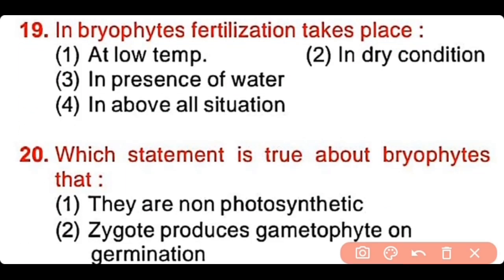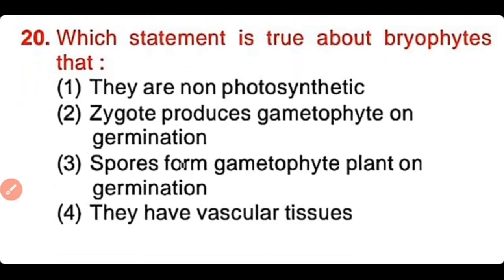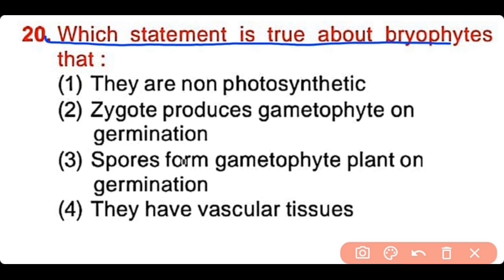Question number 19: In bryophytes, fertilization takes place at low temperature, in dry conditions, in the presence of water, or in all the above situations. The correct answer is option 3 — in bryophytes, fertilization takes place in the presence of water. Question number 20: Which statement is true about bryophytes — that they are non-photosynthetic, zygote produces gametophyte on germination, spores from gametophytic plant germinate, or they have vascular tissue? The correct answer is option 3. Spores from the gametophytic plant germinate — this statement is true regarding bryophytes.